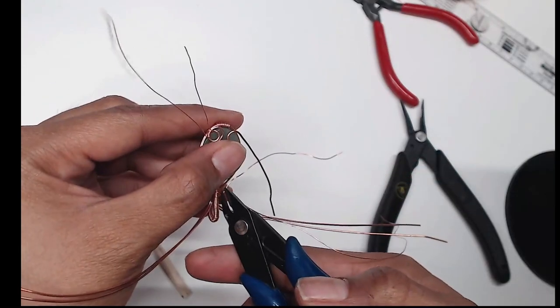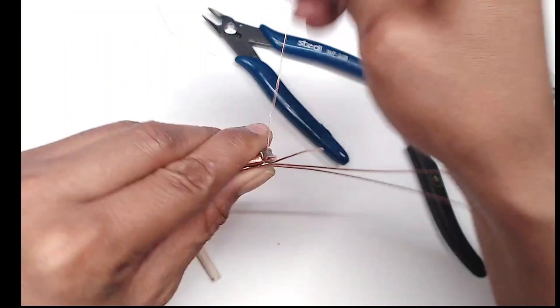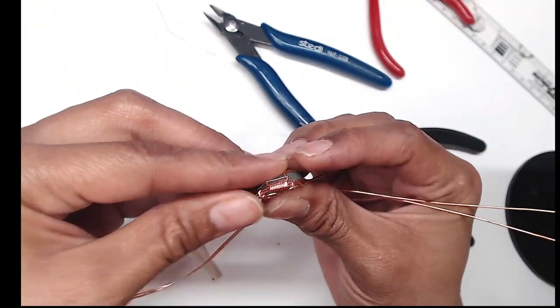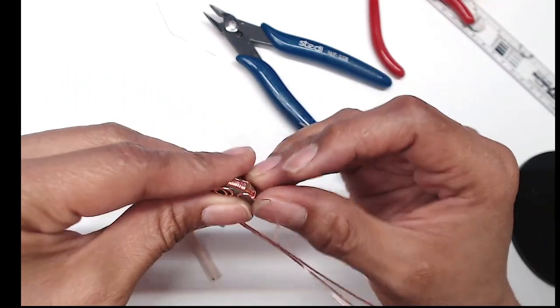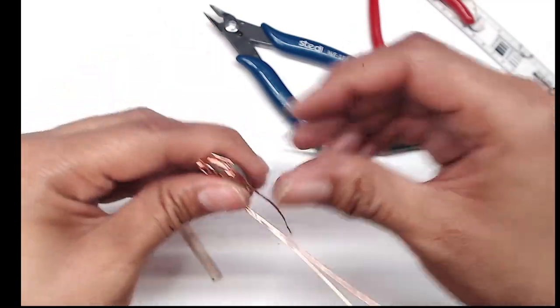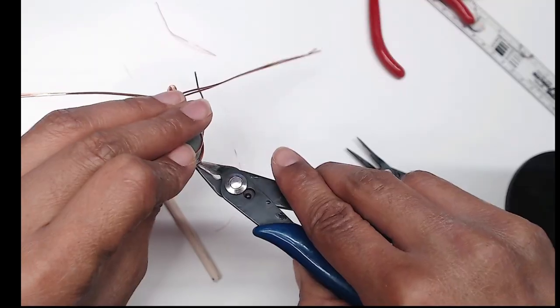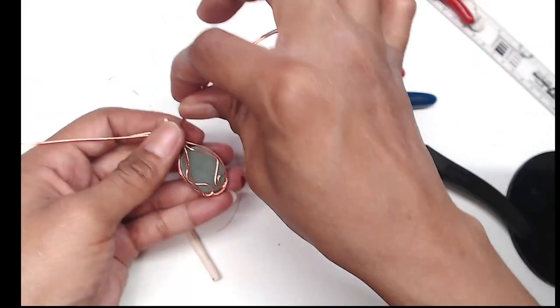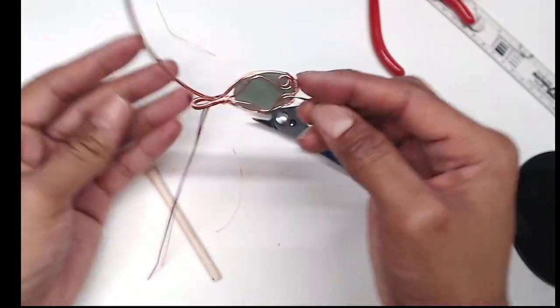Now clip off the excess. I also clipped off the excess tails from the bail. Quick run through of me securing the other side. Here you can see the two wires that we added on either side of our connection to connect the two wires in the back from the bail.